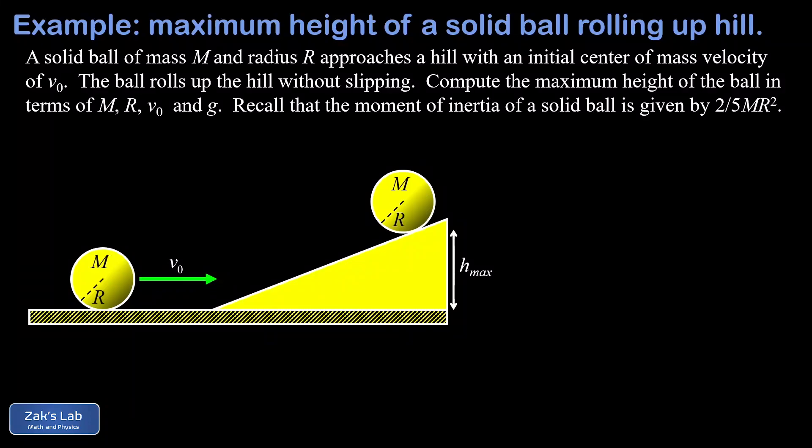In this problem we have a solid ball rolling along a level surface without slipping, and the ball encounters a hill and then rolls up to some maximum height. Of course, the goal of the problem is to solve for that maximum height.